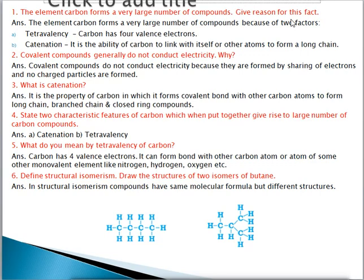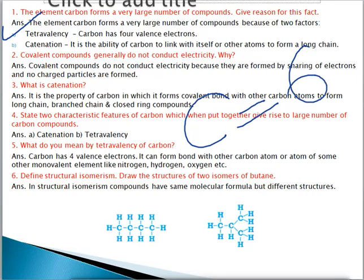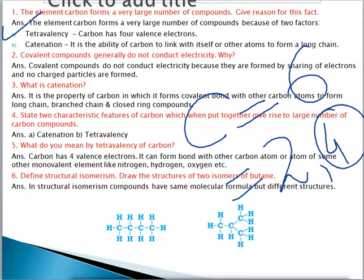Carbon forms a large number of compounds because of two reasons. The first one is tetravalency. The atomic number of carbon is six. If we write the electronic configuration it will be 2, 4. It has four electrons in the outermost or the valence shell. So its valency is also four. That's why carbon has tetravalency — tetravalency means four — and that's why it can form a large number of compounds.